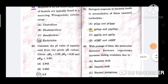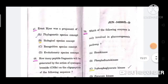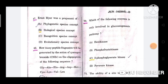Question number 67: Ernst Mayr was a proponent of? Option is B, biological species concept.